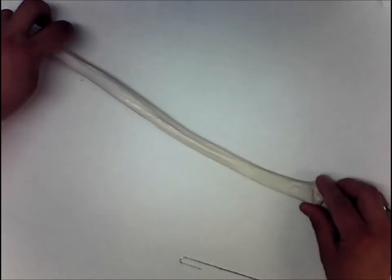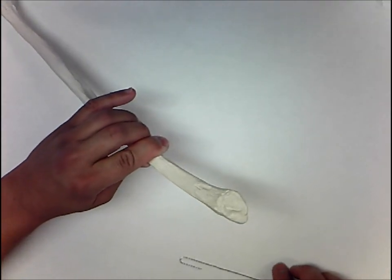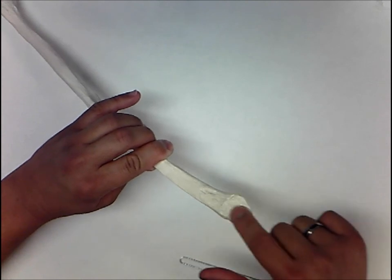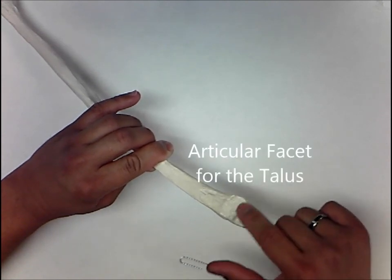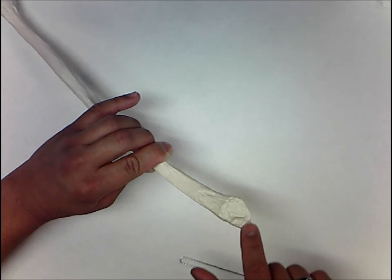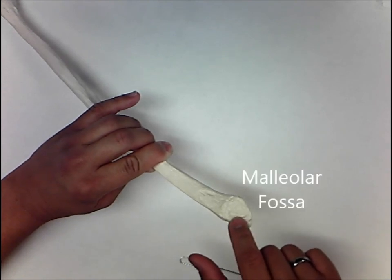On the medial surface of the lateral malleolus are two landmarks. This smooth surface is called the articular facet for the talus. This indentation is called the malleolar fossa.